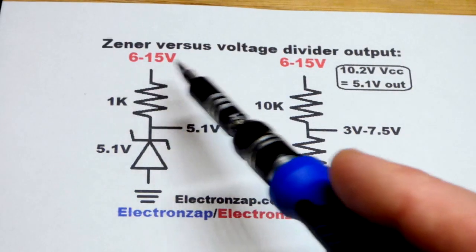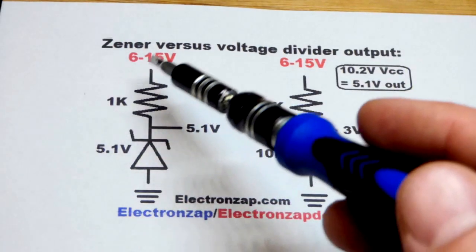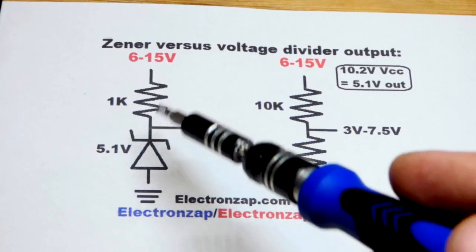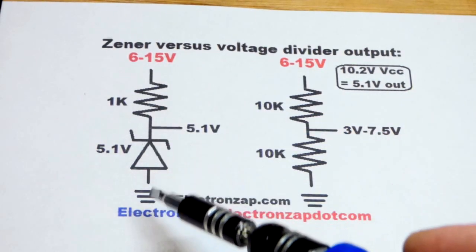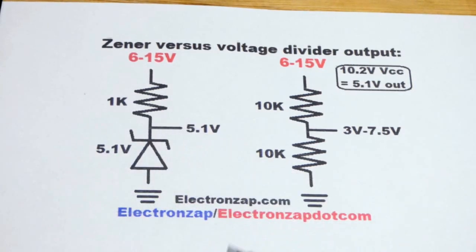Now with the Zener diode, the supply voltage does not matter. What matters is how much current is flowing through the Zener diode. So you have a resistor and even then the voltage doesn't matter that much. But in any case you got current flowing through the resistor, the Zener diode, you're going to get about its Zener voltage out there.